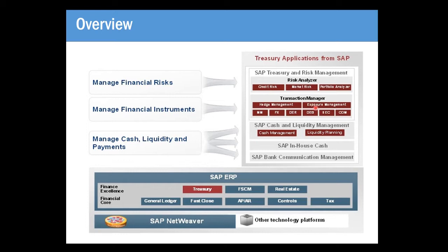Exposure management enables users to manage exposure items for both open commodity items and open currency items. Hedge management allows users to map the hedging of commodity price risks using the corresponding hedging transactions in the transaction manager.